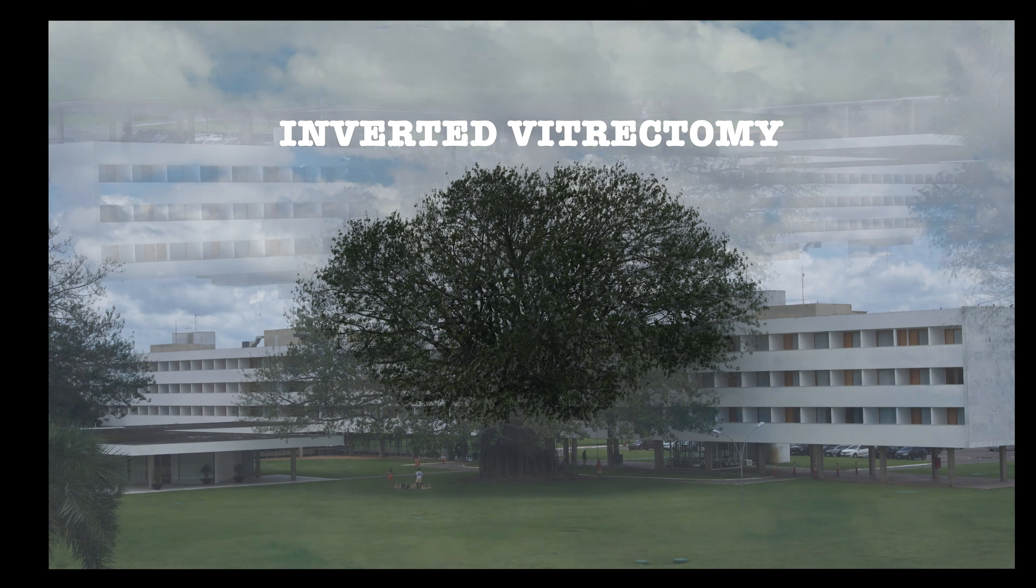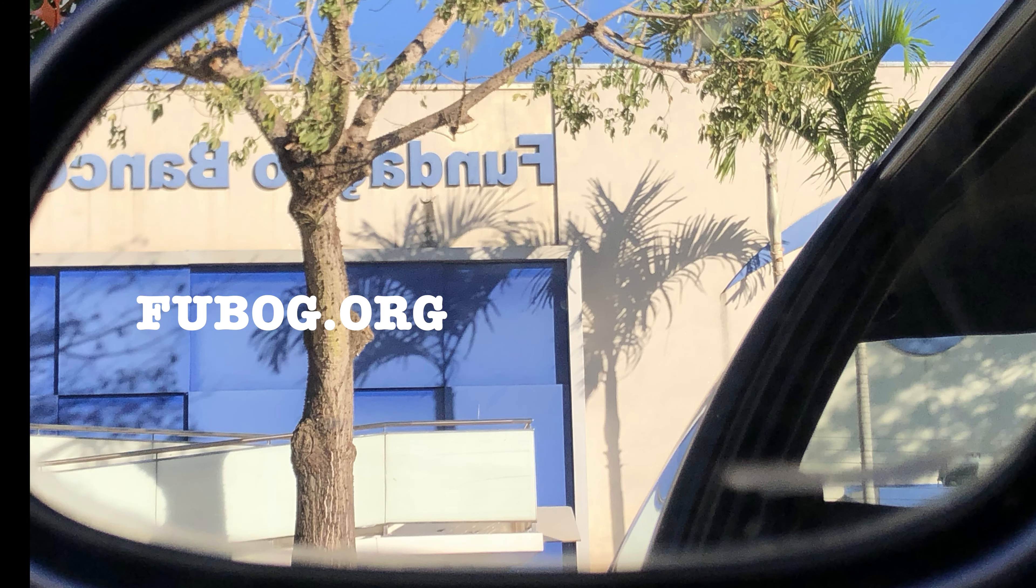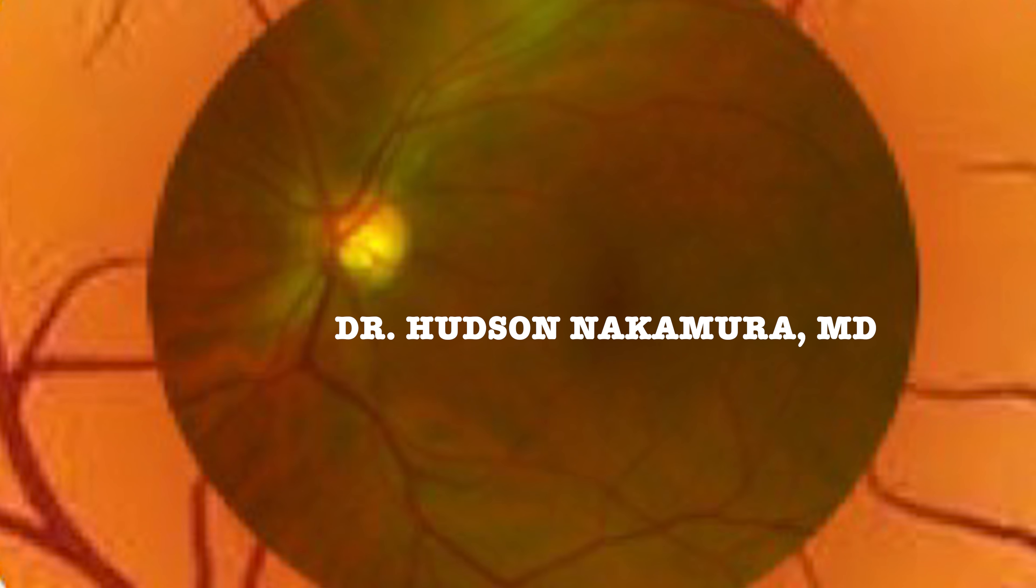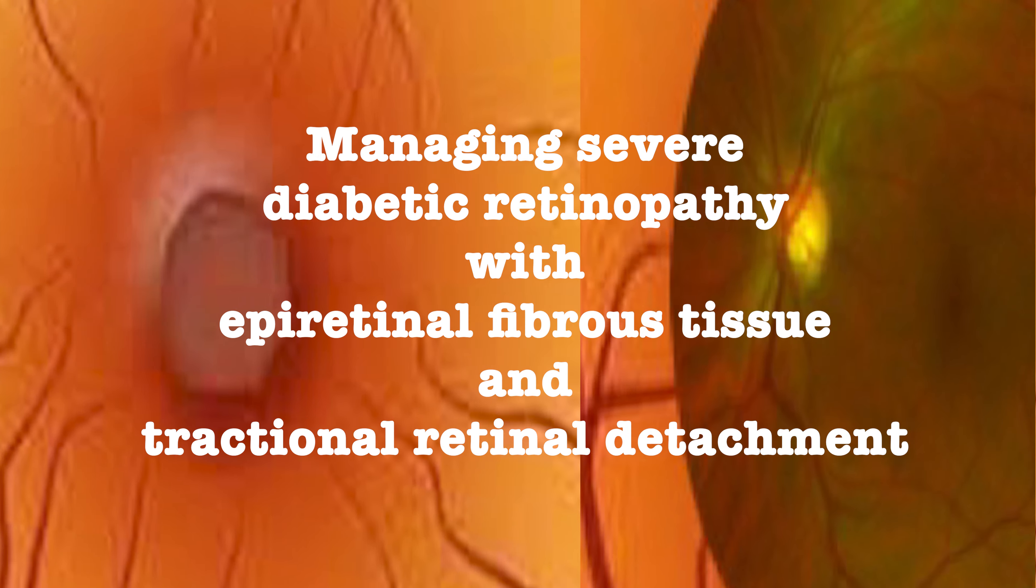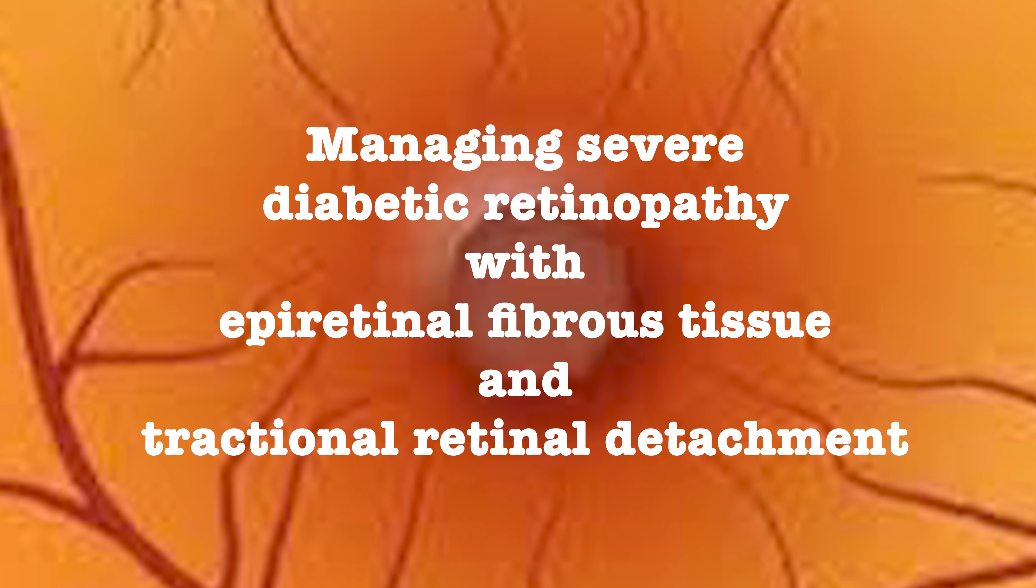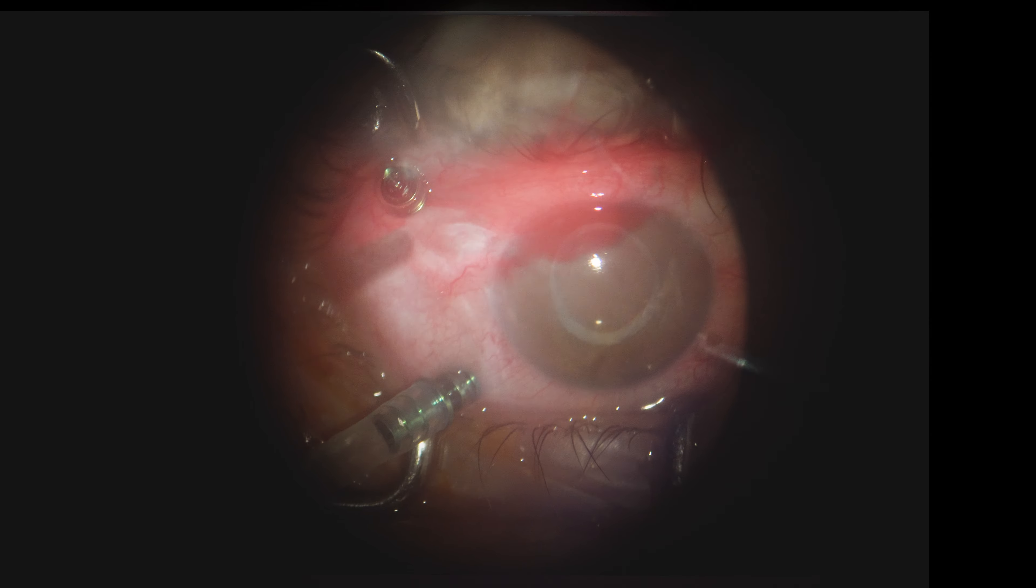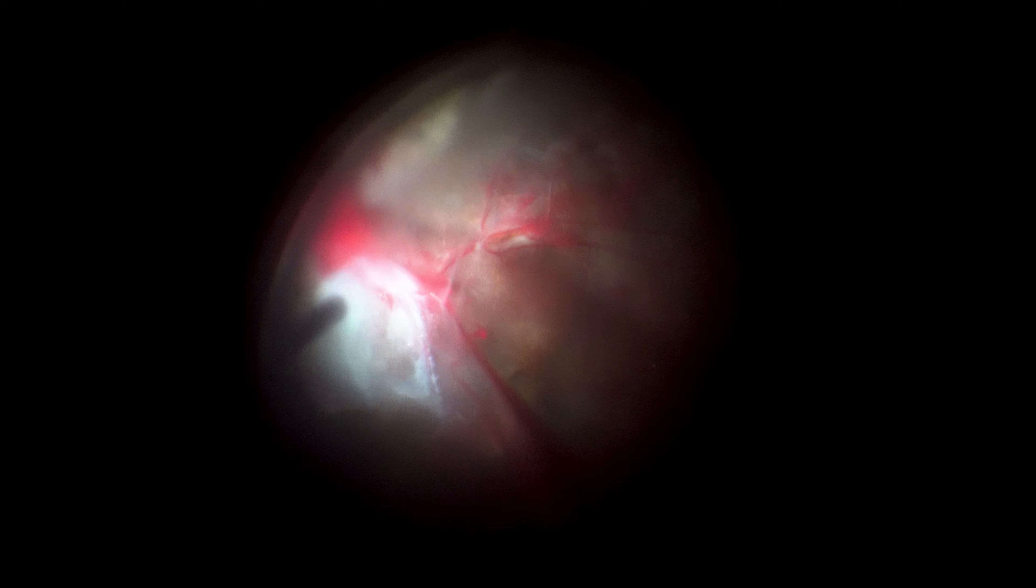This is an inverted vitrectomy managing severe diabetic retinopathy with epiretinal fibrous tissue and tractional retinal detachment. The patient is pseudophakic. This is a 23-gauge pars plana vitrectomy. There are numerous neovessels covered by massive preretinal bleeding together with fibrous tissue on the macular surface.